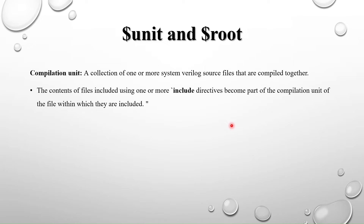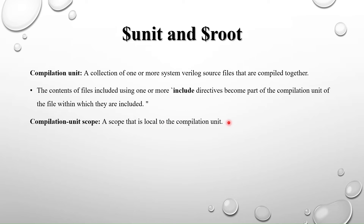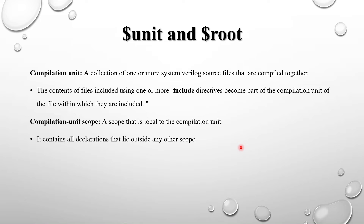The compilation unit scope is a scope that is local to the compilation unit. If you write code inside a module, that becomes the module scope. Outside the module scope is the compilation unit scope. It contains all declarations that lie outside any other scope — outside a module block or a program block — those are in the compilation unit scope. You may have declarations, functions, or tasks in the compilation unit scope.